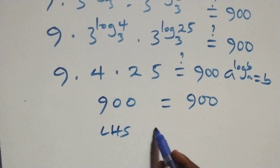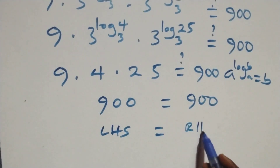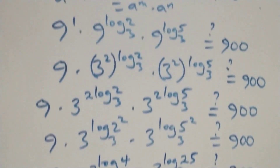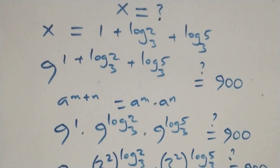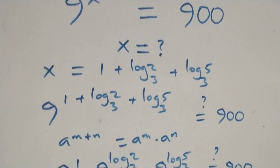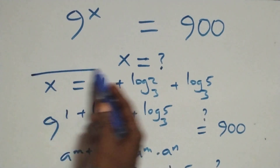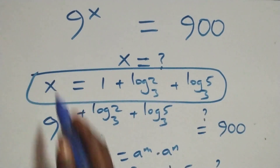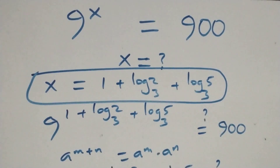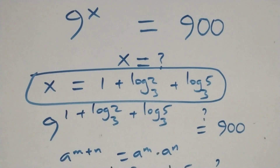We have left-hand side equals right-hand side, and therefore we conclude that x equals to 1 plus log base 3 of 2 plus log base 3 of 5 satisfies the given problem. Thank you for watching. Don't forget to subscribe for more videos, turn on the notification bell, share this video, give it a thumbs up, and put your comments. See you next lesson, bye for now.